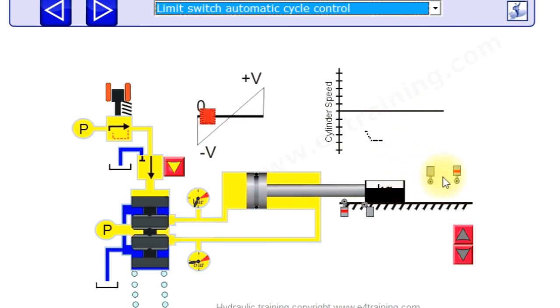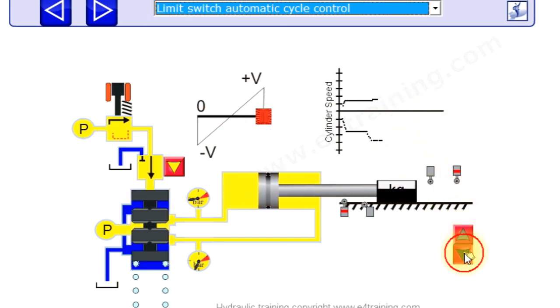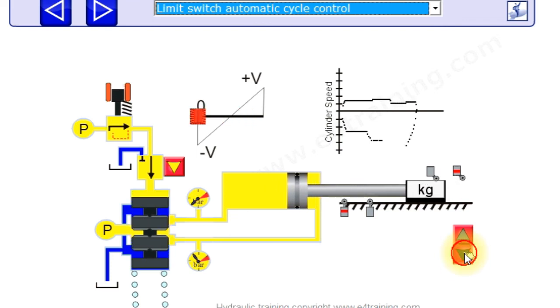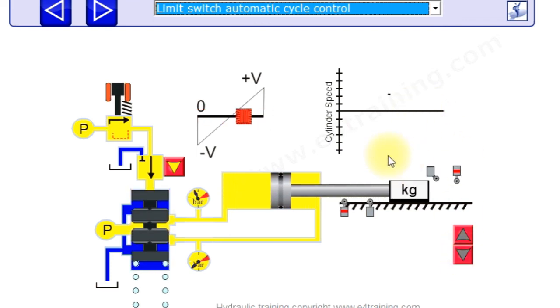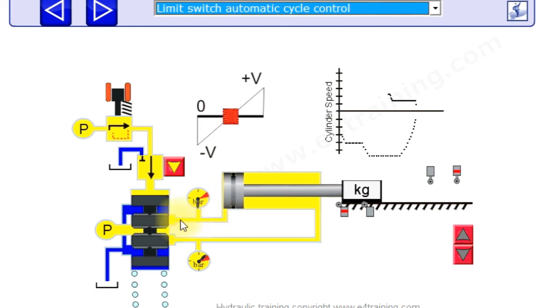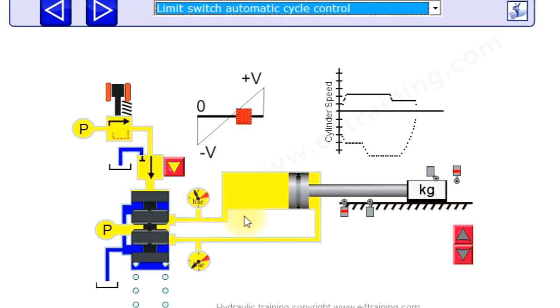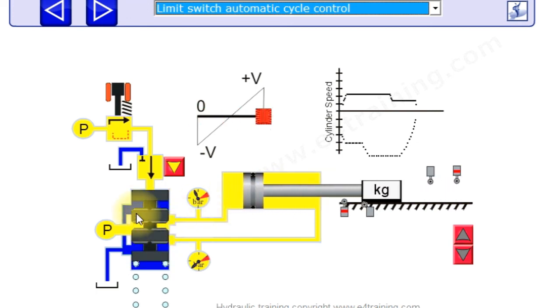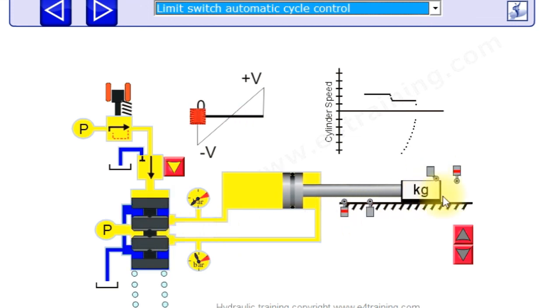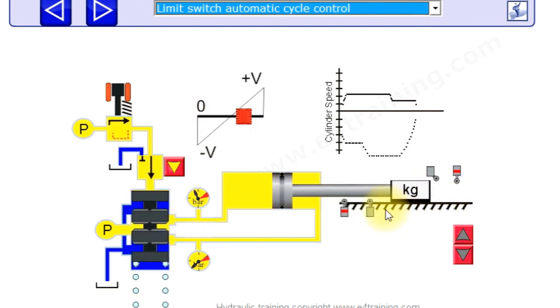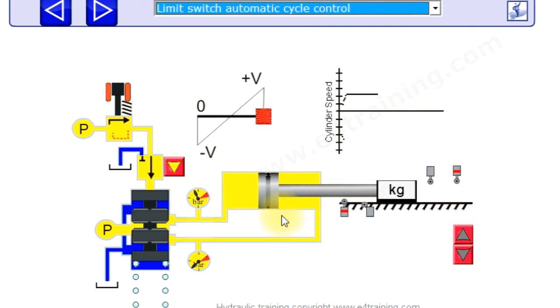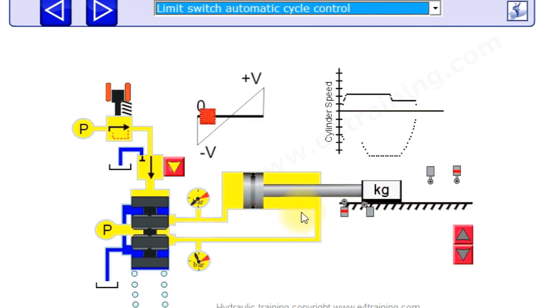You'll note the speed still changes because as we found out earlier, the flow through a valve depends on its pressure drop across it which depends on its load pressure. So we're stopping in the same position whatever the loads on this system are.